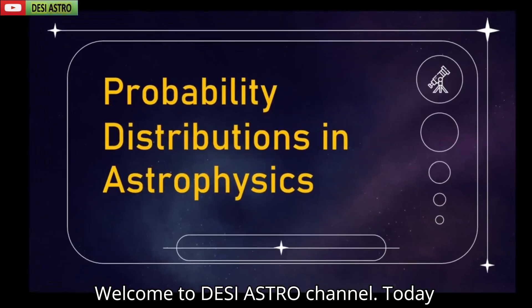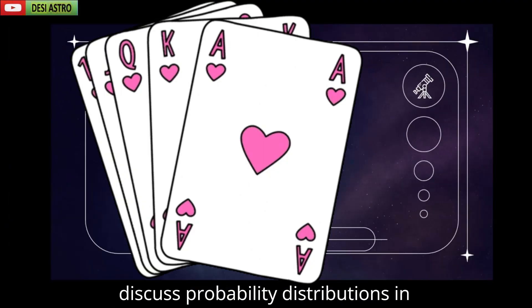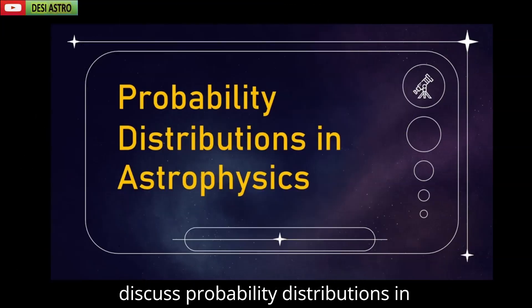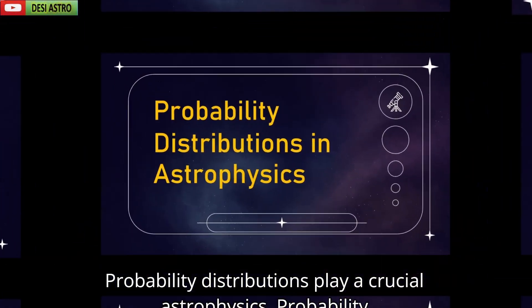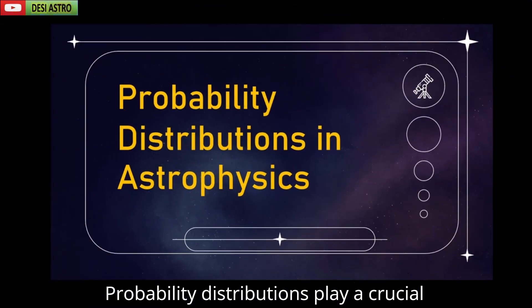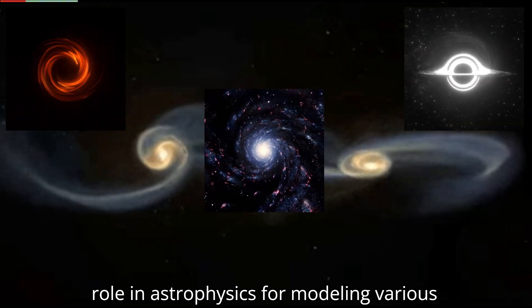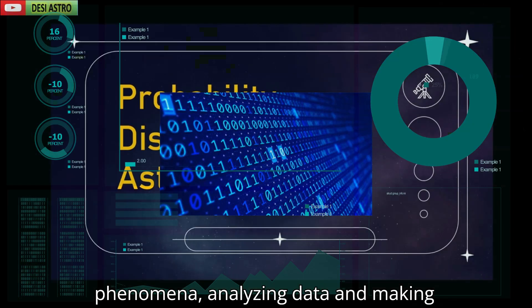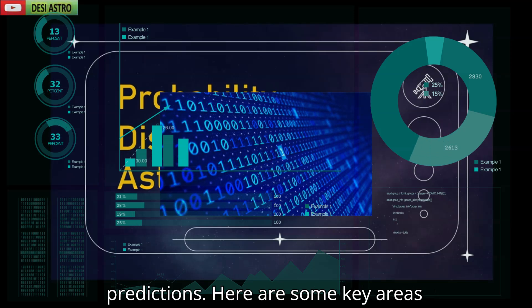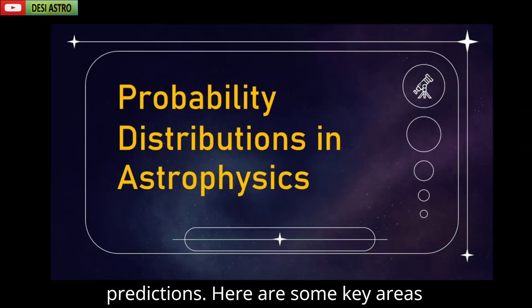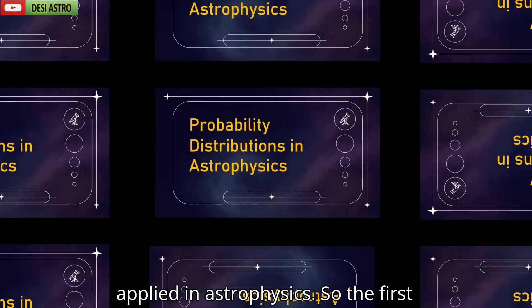Welcome to Desi Astro channel. Today, we are going to discuss probability distributions in astrophysics. Probability distributions play a crucial role in astrophysics for modeling various phenomena, analyzing data, and making predictions. Here are some key areas where probability distributions are applied in astrophysics.